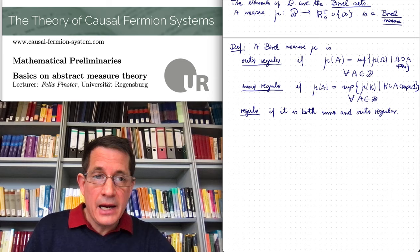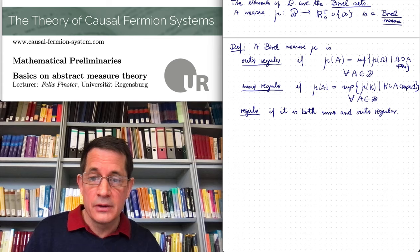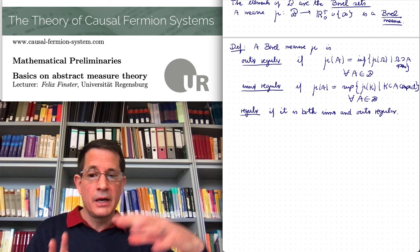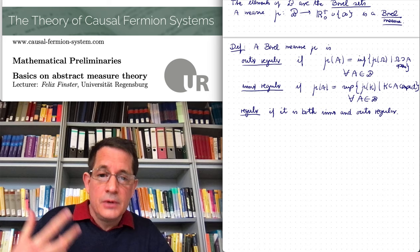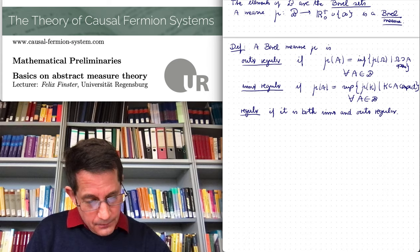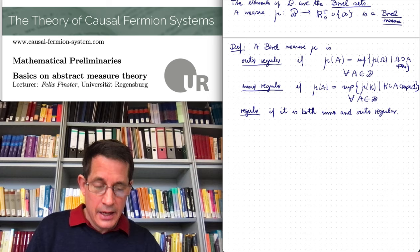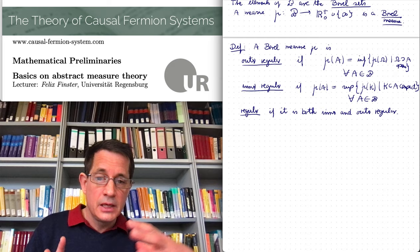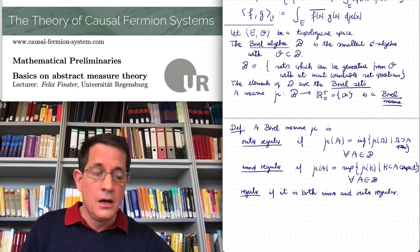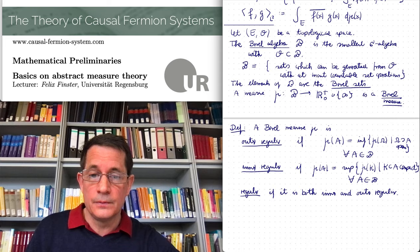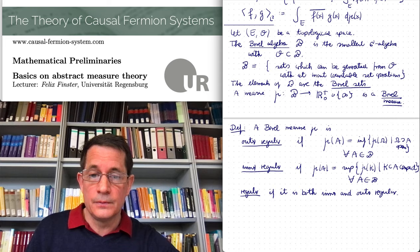The Lebesgue measure is regular — this follows from its construction, which always involves approximating from inside with compact sets and from outside with open sets. These regularity conditions come out of that construction and make precise that the measure has nice approximation properties. I think this is all we need here — we will also need the notion of the support of a measure, but since it is not quite so standard I will explain it in another video. I hope you found this helpful and hope to see you again soon. Bye-bye.